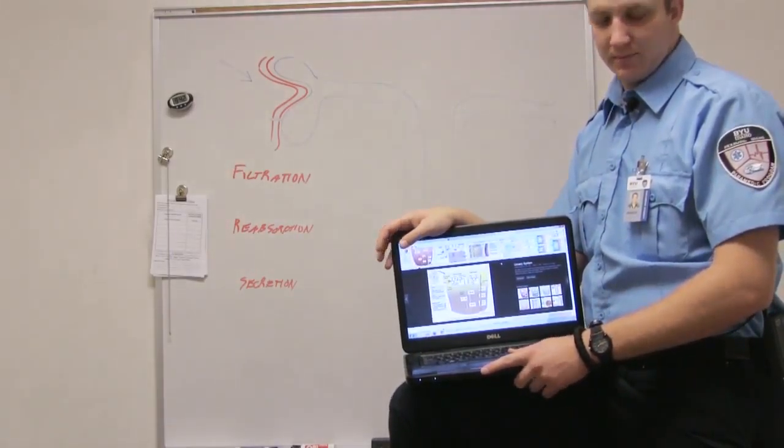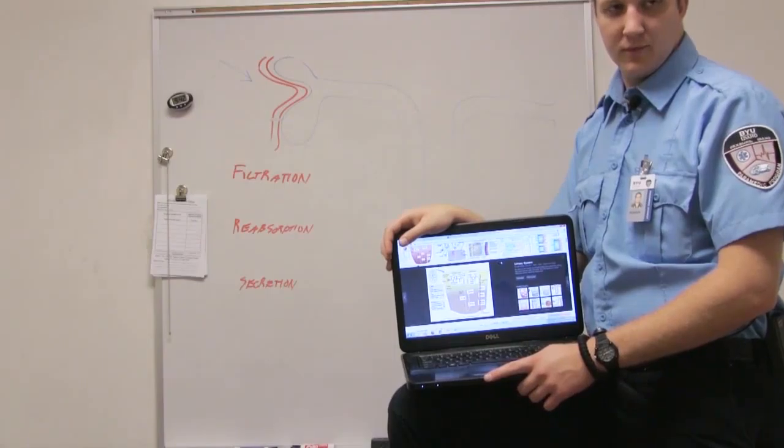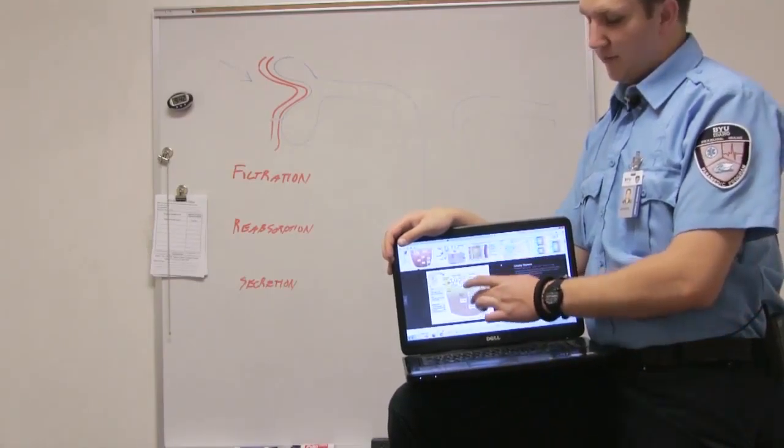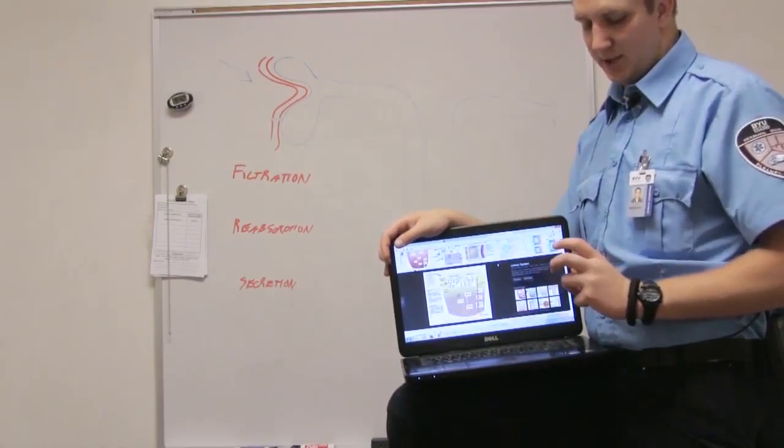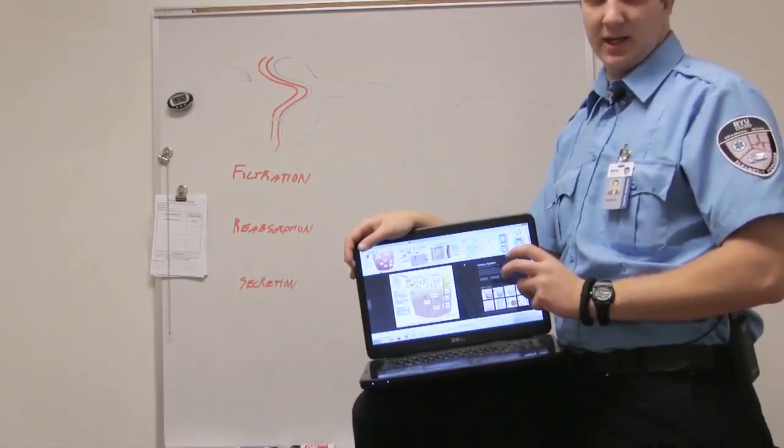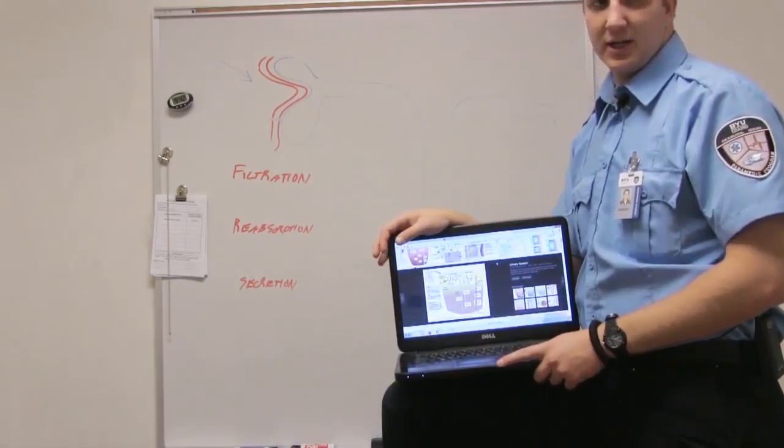When you say deeper in the nephron, do you mean like further down the loop of Henle? Further down the loop of Henle and closer to the medulla. The closer to the medulla we get, the more concentrated it gets.